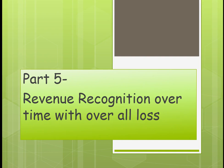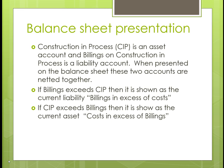Part 5: Revenue Recognition. Construction in process (CIP) is an asset account and billings on construction in process is a liability account. When presented on the balance sheet, these two accounts are netted together. If billings exceed construction in process, it is shown as a current liability: billings in excess of costs. If construction in process exceeds billings, it is shown as a current asset: costs in excess of billings.